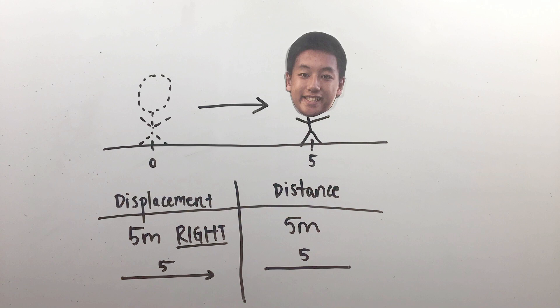In essence, displacement measures where you end up relative to where you started, whereas distance measures only how far in total that you've traveled.